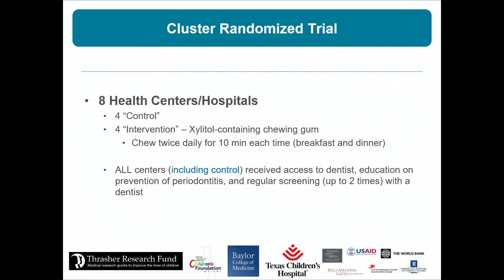In the intervention group, pregnant people received xylitol chewing gum and were instructed to chew two pieces a day — one after breakfast and one after dinner — for 10 minutes at a time. All centers, including controls, received access to dentists, dental screenings, and education, so the control group should be considered an active comparator.